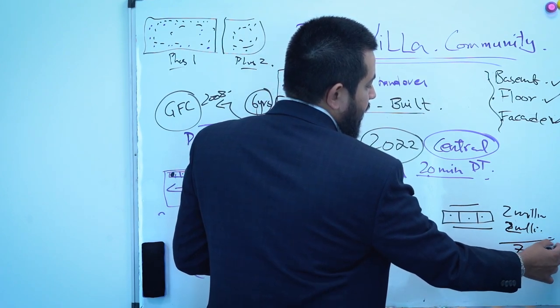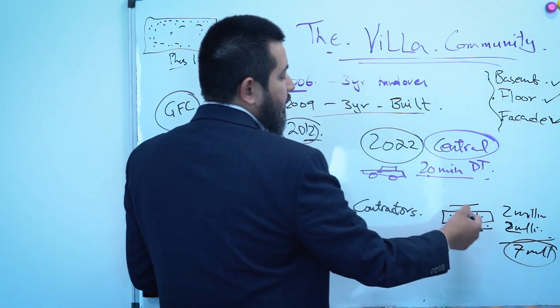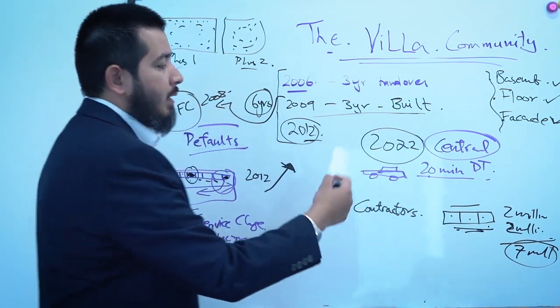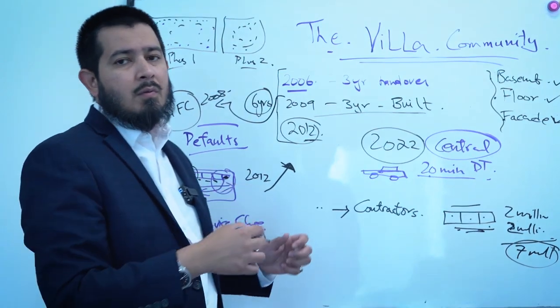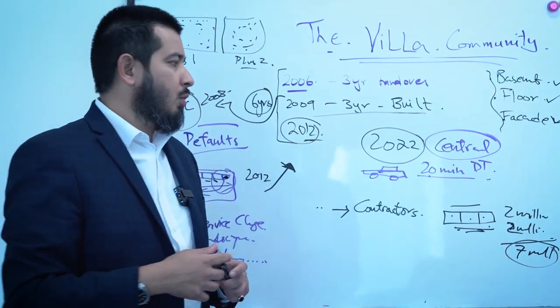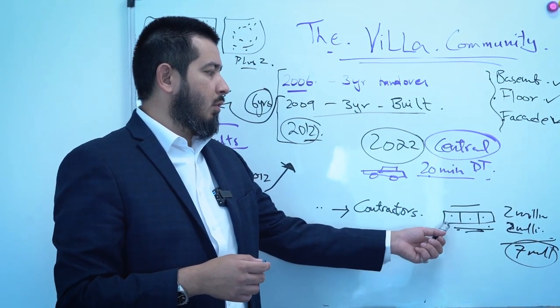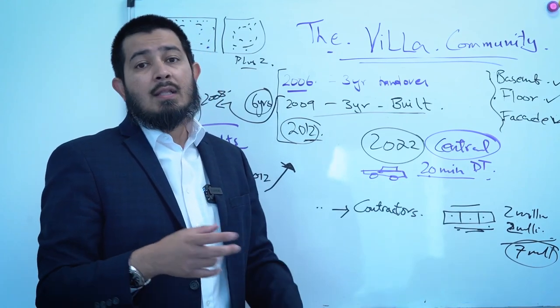So the plot cost them 2 million, they spend another 3 million or 1 million or 2 million on the house and they sold it for 7 million. And having plots next to each other is good because your workers can work on one and the other and then the other, so you can use one plot to store all your stuff and then do these two.